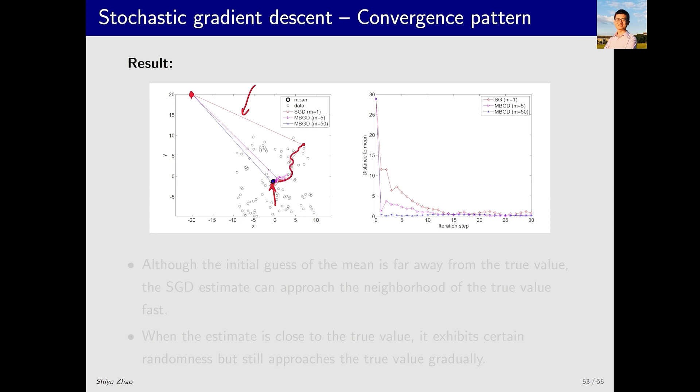Apart from the SGD trajectory, there are also other curves shown in this figure. For now, let's just focus on the SGD trajectory. The other curves relate to a method called mini-batch gradient descent, which will be discussed later. From this figure, we can clearly see some interesting behaviors.